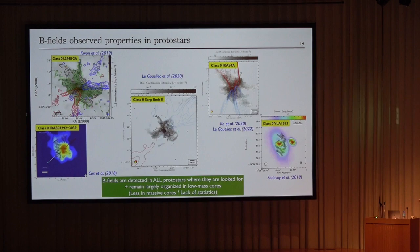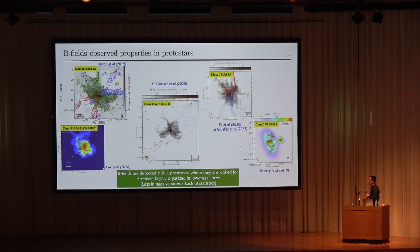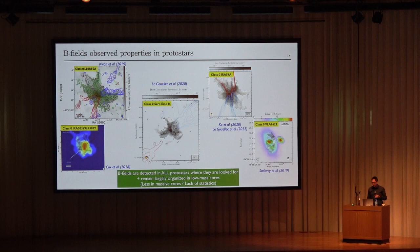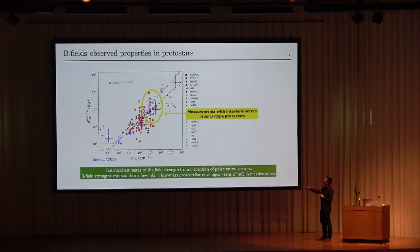There have been observations of magnetic field at core scales. For low-mass cores, when dust polarization is detected, the magnetic field is well-ordered and exhibits the famous hourglass shape, indicative of magnetically regulated collapse. This may not be the case for more massive protostars where more statistics are needed. Using the Davis-Chandrasekhar-Fermi method, Liu et al. 2022 derive magnetic field amplitudes on the order of milligauss in collapsing cores.